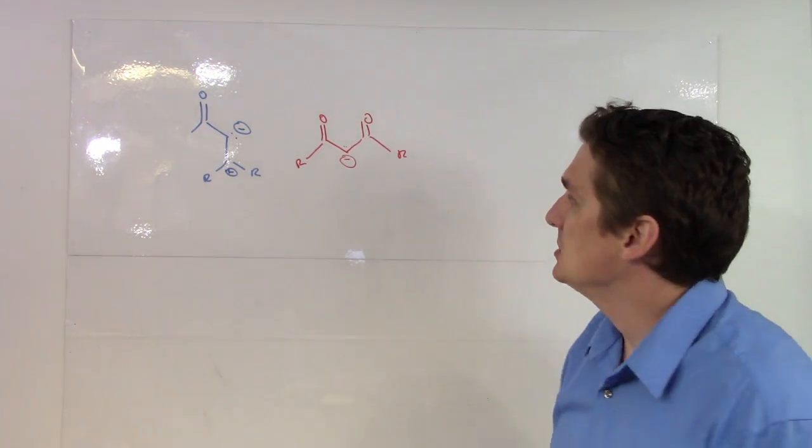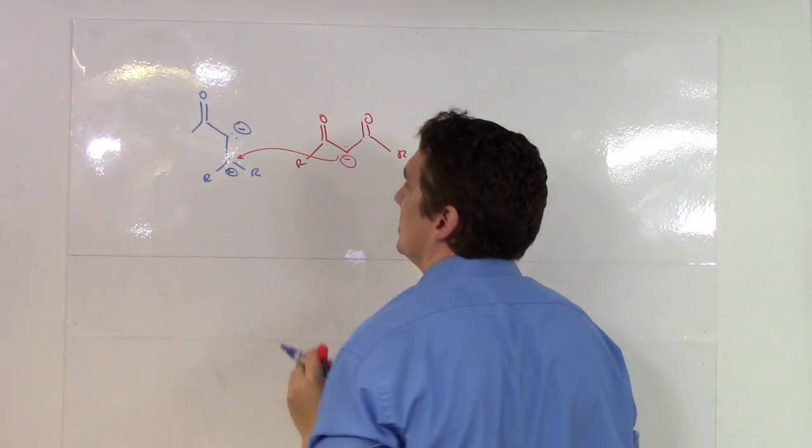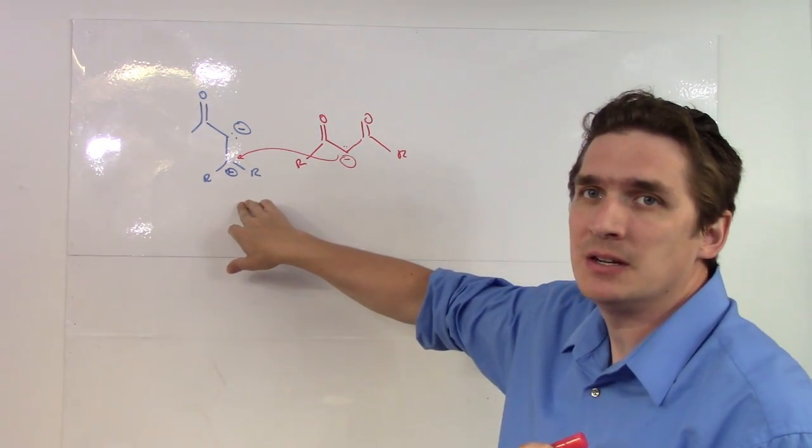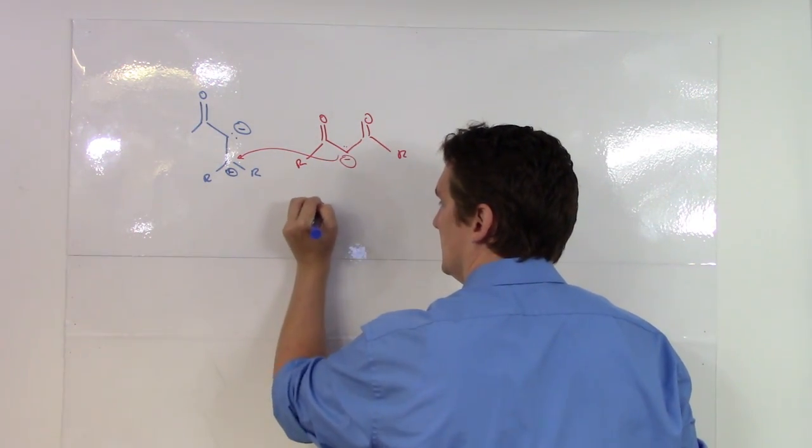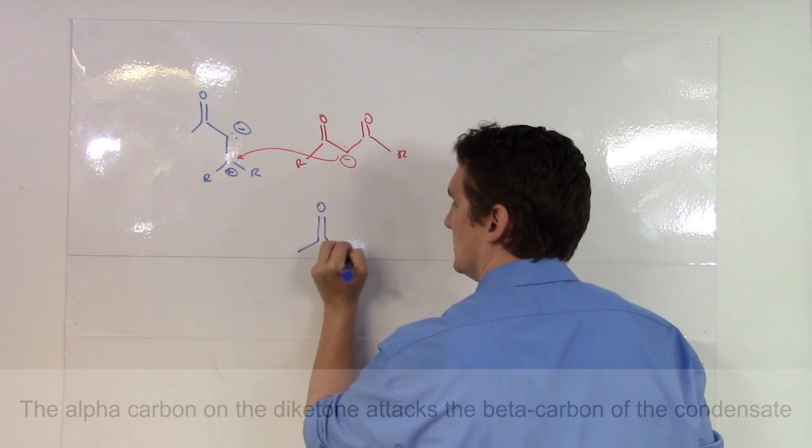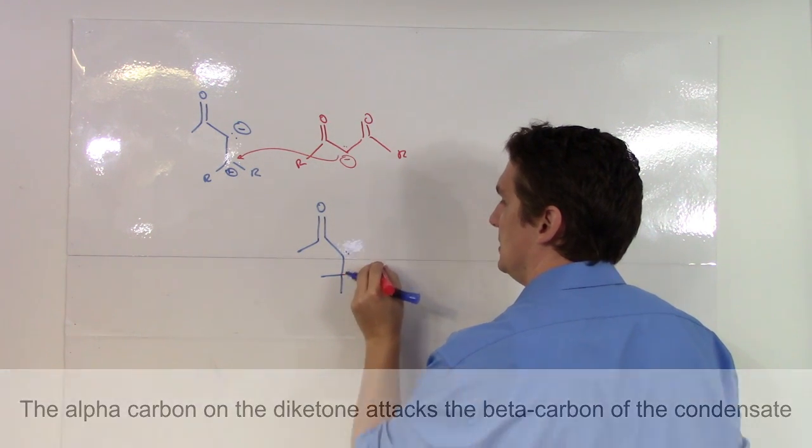Well, because we can do this, we actually see attack of this carbon onto this particular carbon on the alpha, beta unsaturated ketone. And so initially what we get is this compound here.